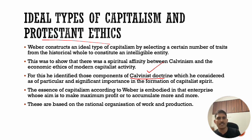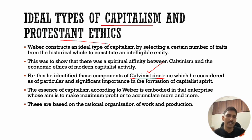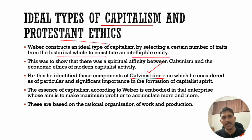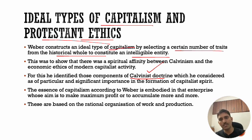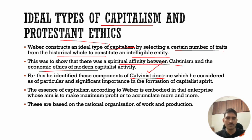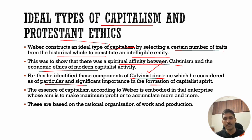Similarly, Max Weber conceptualized that capitalism first developed in countries where Protestant ethics were followed. So Weber constructed an ideal type of capitalism by selecting a certain number of traits from the historical whole to constitute an intangible entity. He showed that there was a spiritual affinity between Calvinism and the economic ethics of modern capitalist society, identifying those components of Calvinist doctrine which he considered of particular and significant importance in the formulation of the capitalist spirit.